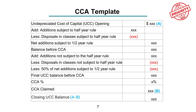This final UCC balance before CCA is the number you multiply by the CCA rate. Remember, the CCA rate stated in the Tax Act is a maximum amount, so theoretically you can apply 0%, though most people take the maximum. To determine the closing UCC balance for this year — which is also the opening balance for next year — simply take the opening UCC balance minus the CCA claimed for this year.